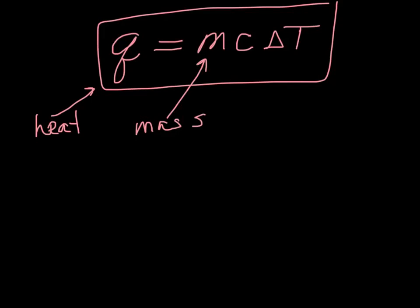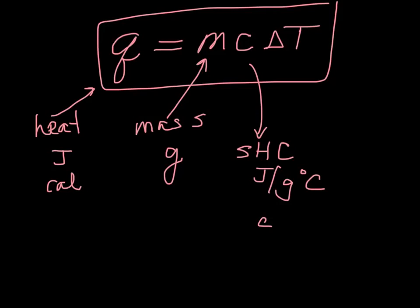Remember, heat is going to be in joules or calories. Mass is going to be in grams. c is the symbol for specific heat capacity, so that's going to be in joules per gram degrees Celsius or calories per gram degrees Celsius. And the change in temperature will be in degrees Celsius.